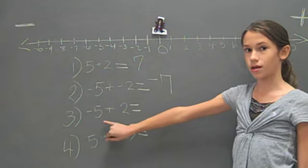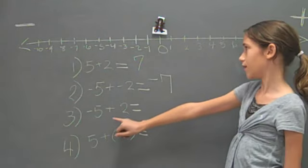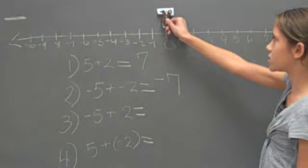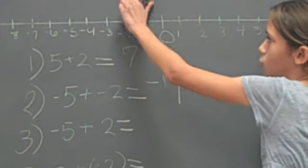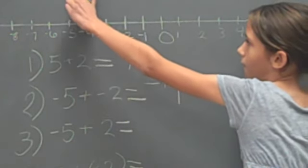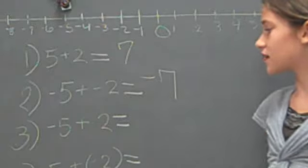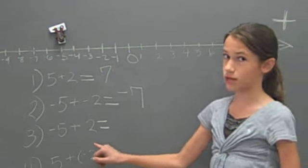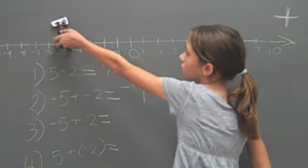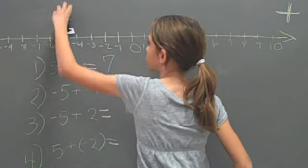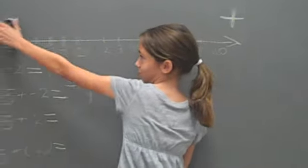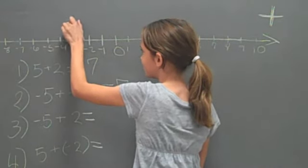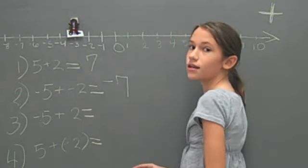For the next problem, negative five is a negative number. So, face it to the left side of the number line, where the negative numbers are. And the answer is negative three.